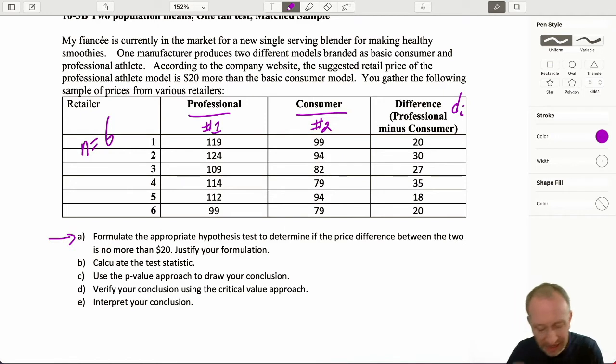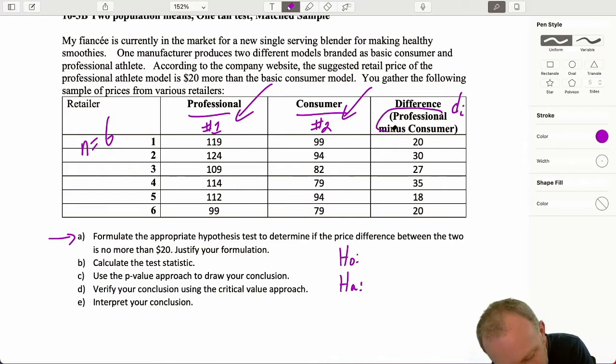We want to formulate a test to determine if the price difference between the two is no more than $20. Now, again, I'm emphasizing this because when we were looking at two independent samples, the first few problems in module 10, remember all those one-tail tests, whether they were lower tail or upper tail, they all depended on how we defined our terms. That's why I'm writing this in here, that that's how those have been defined based on that calculation, that it's professional minus consumer.